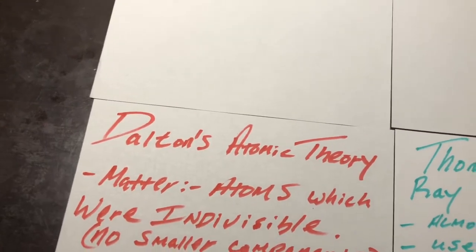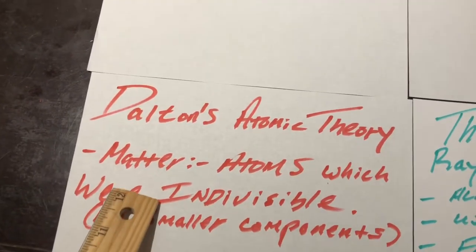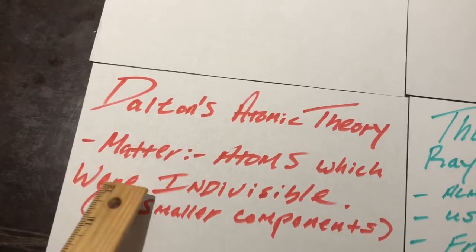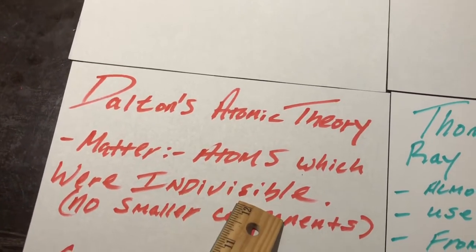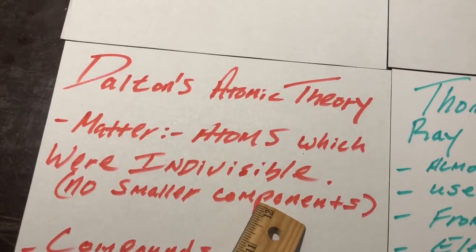We're going to do some history now. Today we're going to look at Dalton's Atomic Theory. Dalton proposed that matter is made up of atoms, and he said the atoms were basically indivisible, therefore you can't get any smaller parts or any smaller components to them.